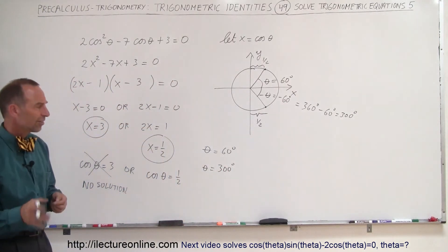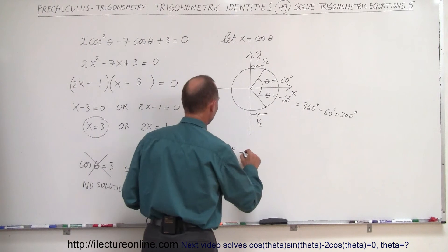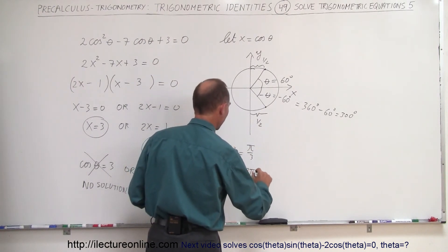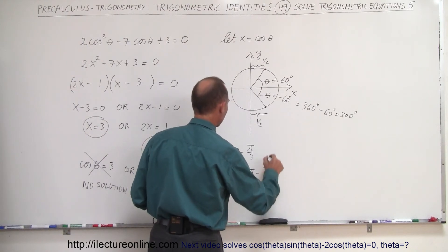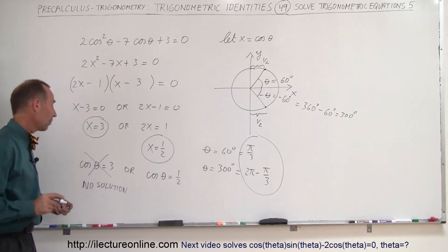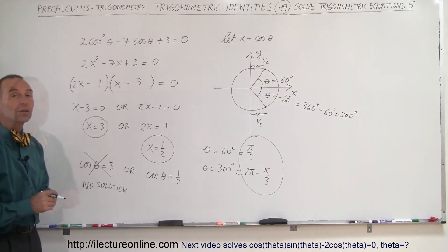Converting that to radians, 60 degrees is pi divided by 3, and 300 degrees is 2 pi minus pi divided by 3. And so those would be the two possible answers that make this equation come out right. We don't have any solution for that part of the equation.